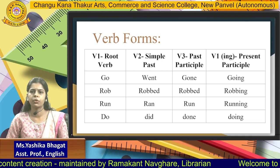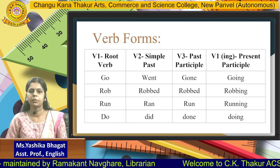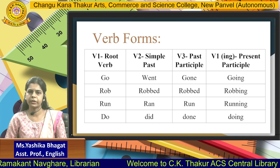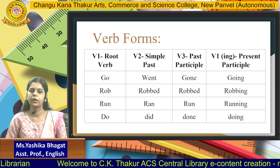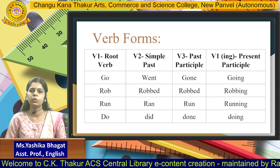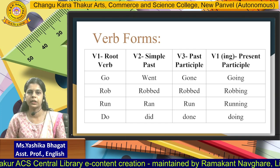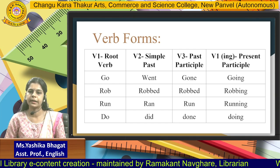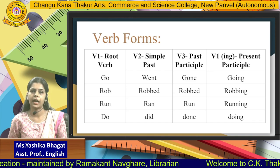We need not remember the technical names for today's topic. But let us understand the difference between all four. V1, V2, V3, V1-ing: for example, go, went, gone, going. Rob, robbed, robbed, robbing. In many examples V2 and V3 are the same, but as you can also see, V2 and V3 can vary. The third example is run, ran, run, running. Fourth: do, did, done, doing.